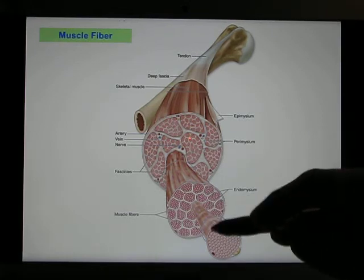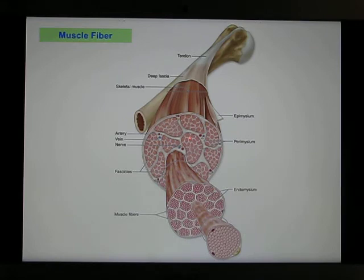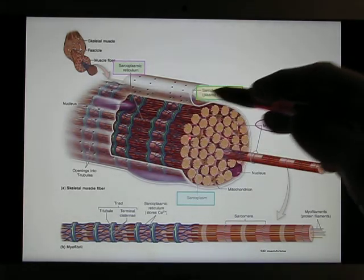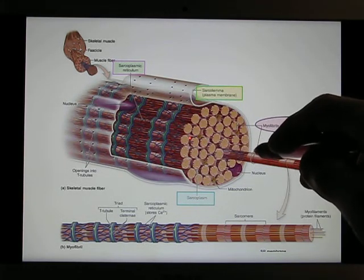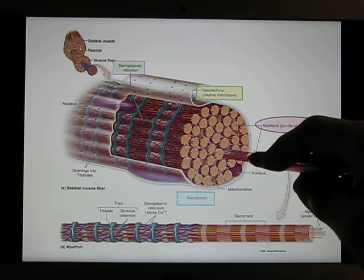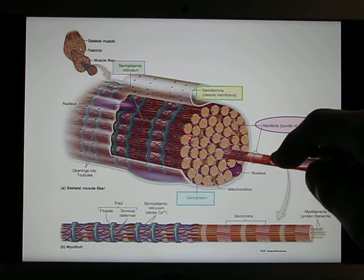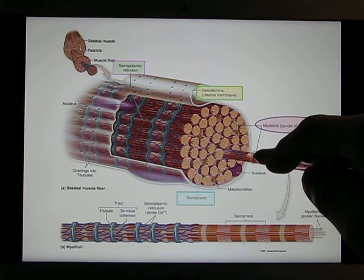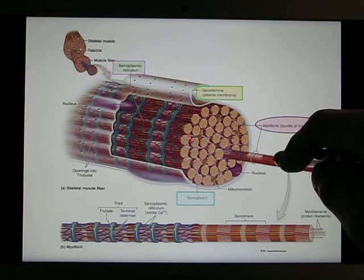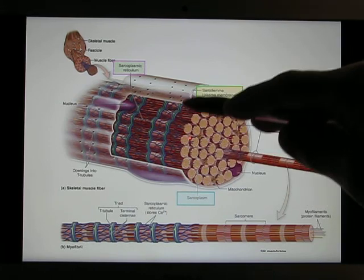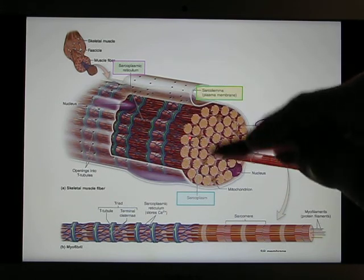Muscle cells — we call them muscle fibers — and we now look at the muscle cell structure. Muscle fibers are pretty well organized. Inside the muscle fiber, those thick filaments and thin filaments are pretty well organized, and we call each unit a sarcomere. You put those muscle microfibers — the thick filaments and thin filaments organized together — and that's the muscle fiber. Outside you have the cell membrane, we call it the sarcolemma.